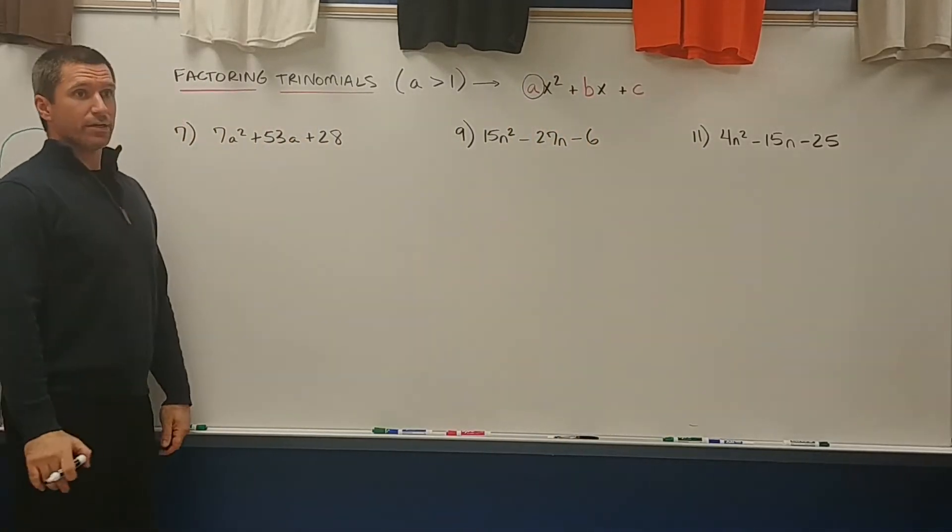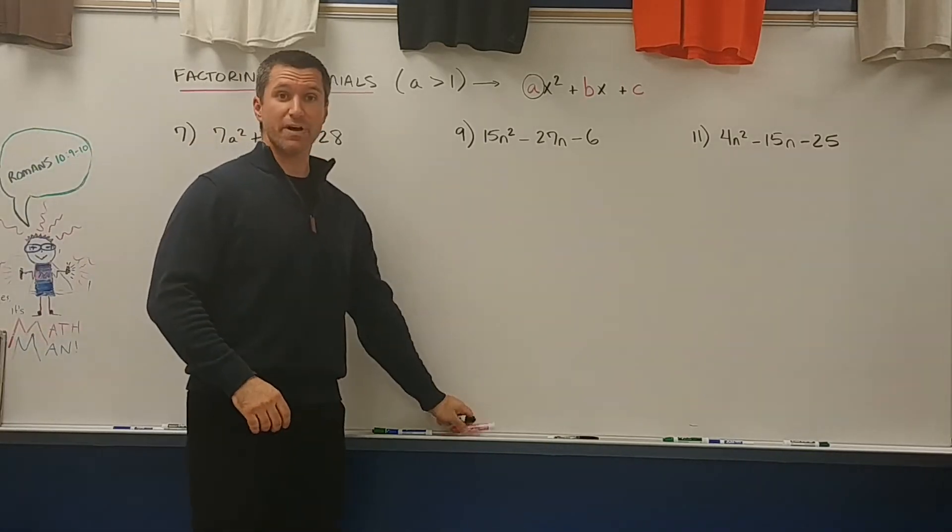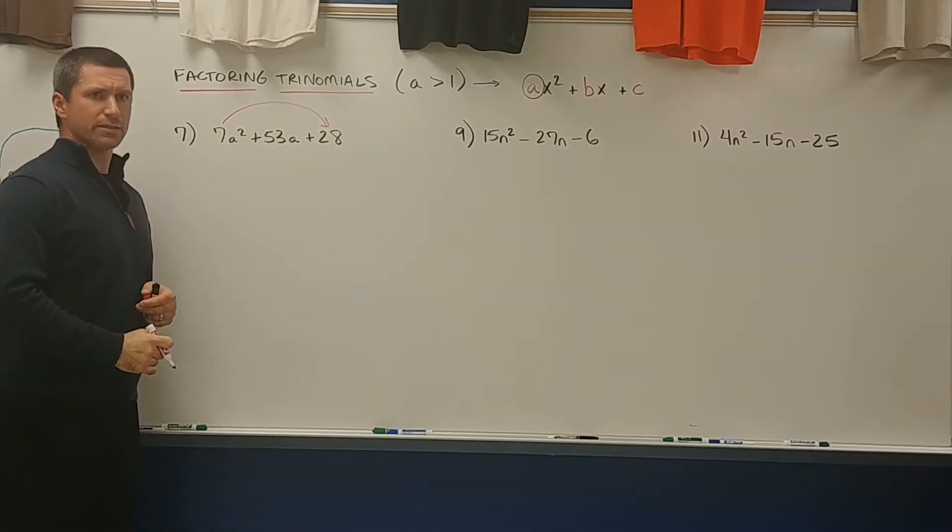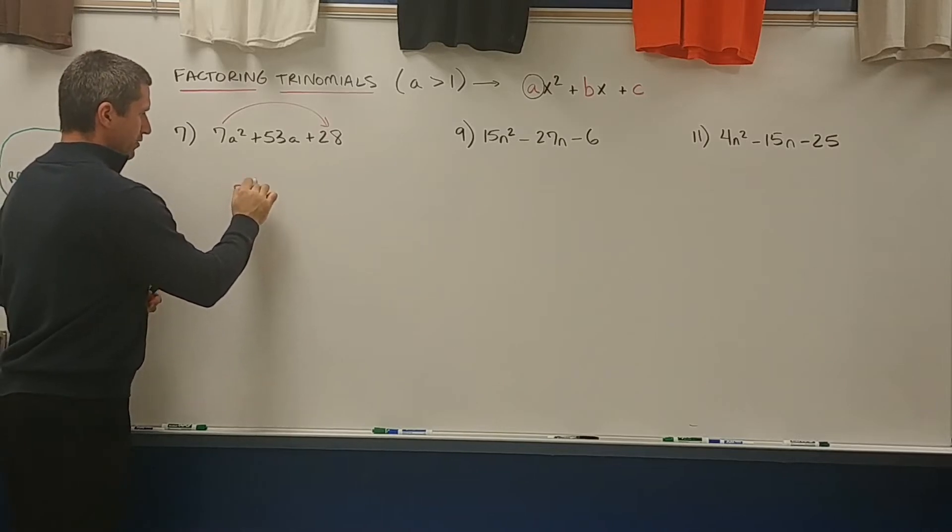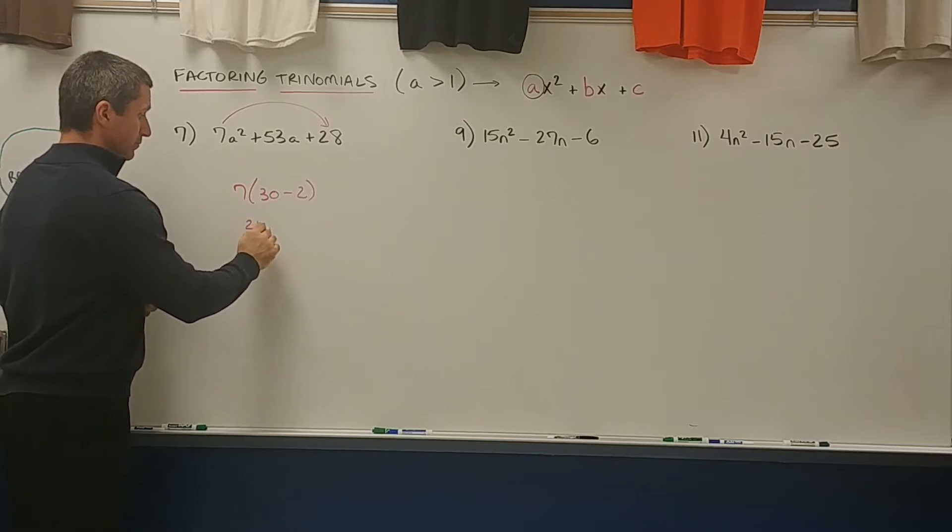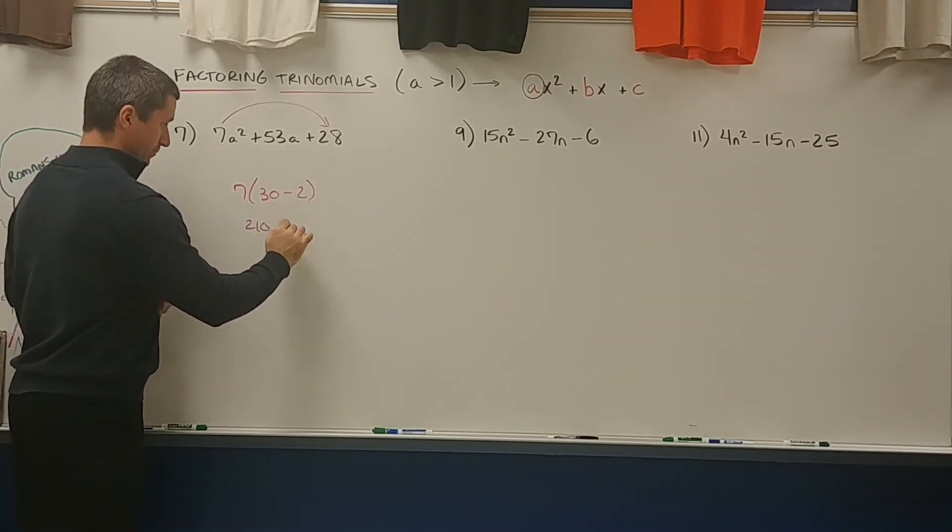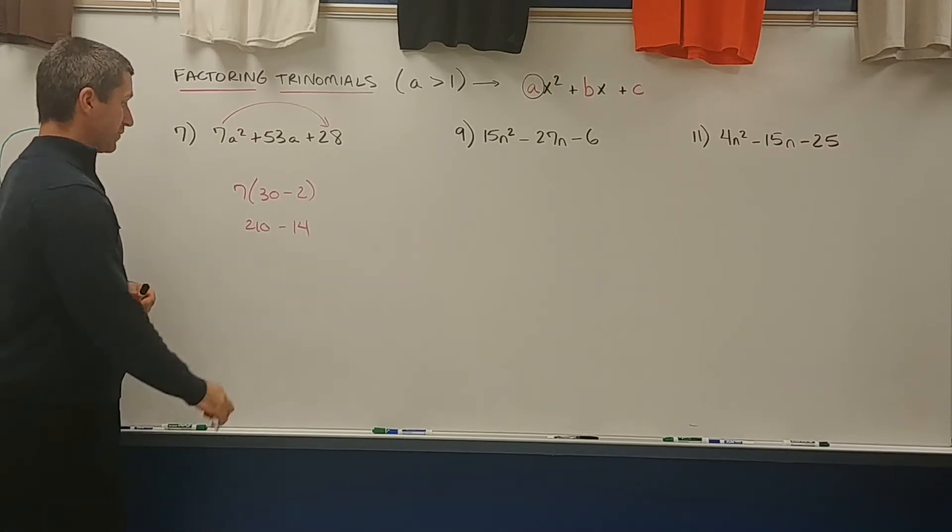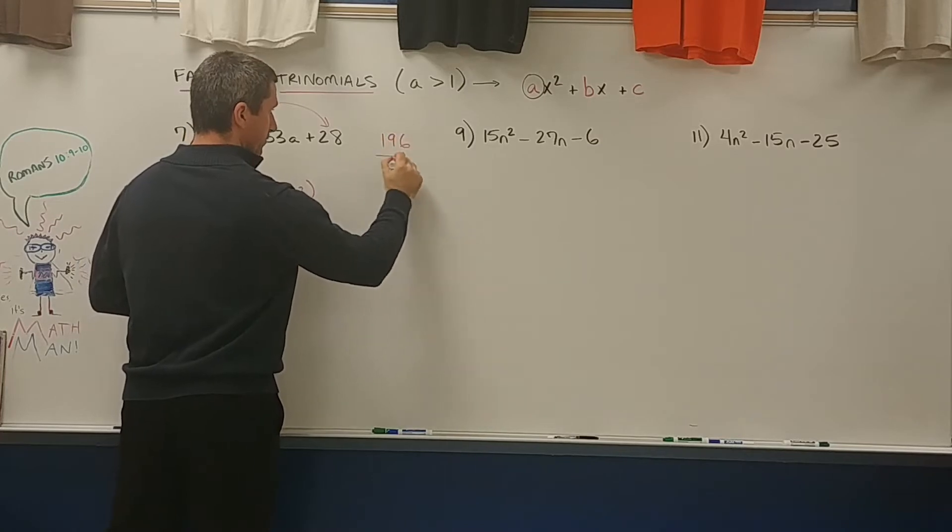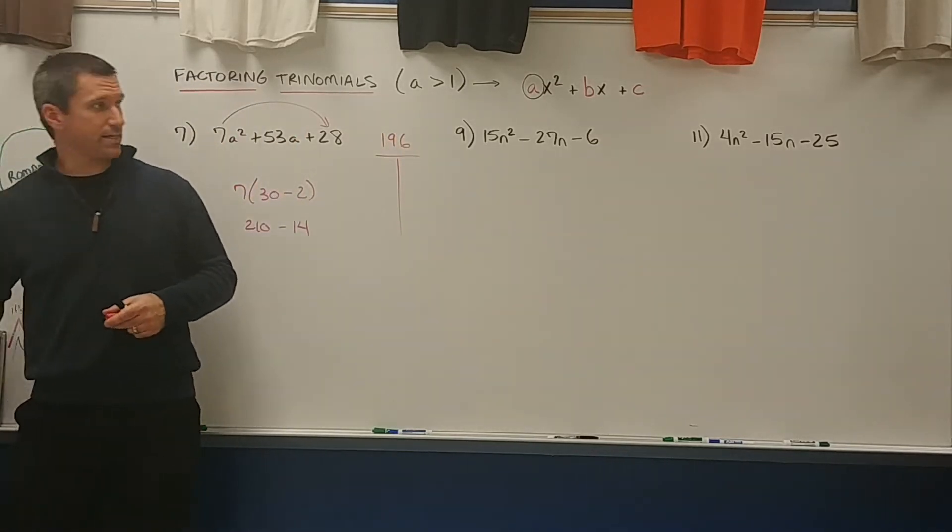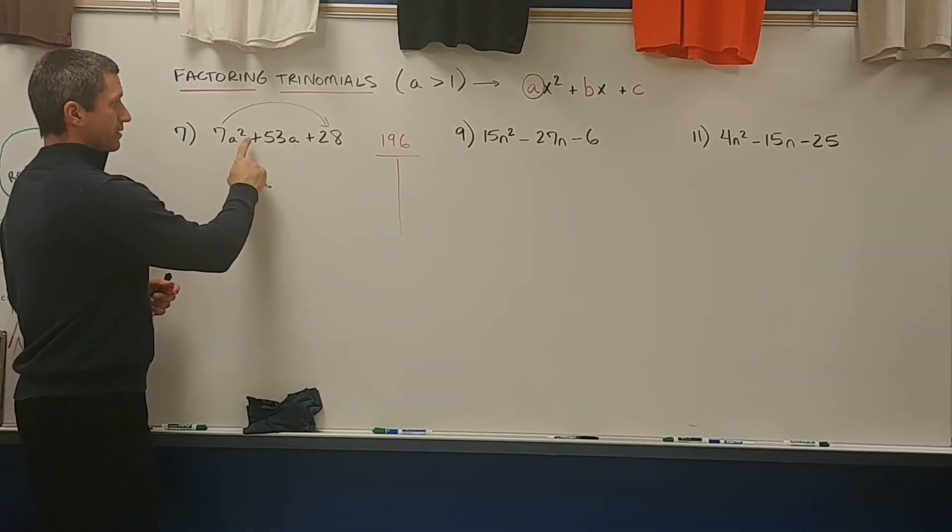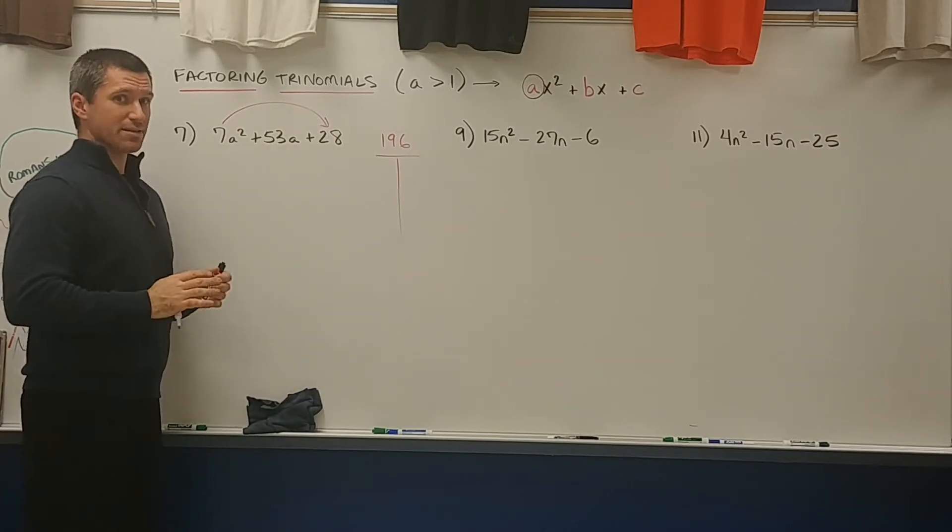Yesterday we did factor by grouping. So a quick review of how to do that. Multiply the first times the last. 7 times 28. I'll use a skill that my younger son is doing right now where he does 7 times 30 and 7 times negative 2 and then he subtracts those. It's a good way to do it. What is that, 196? Okay, so we got 196 over here. We need the factors of 196 to generate a 53. Now the good part about this is that it's plus plus so these have to be both positive factors when we look at it.